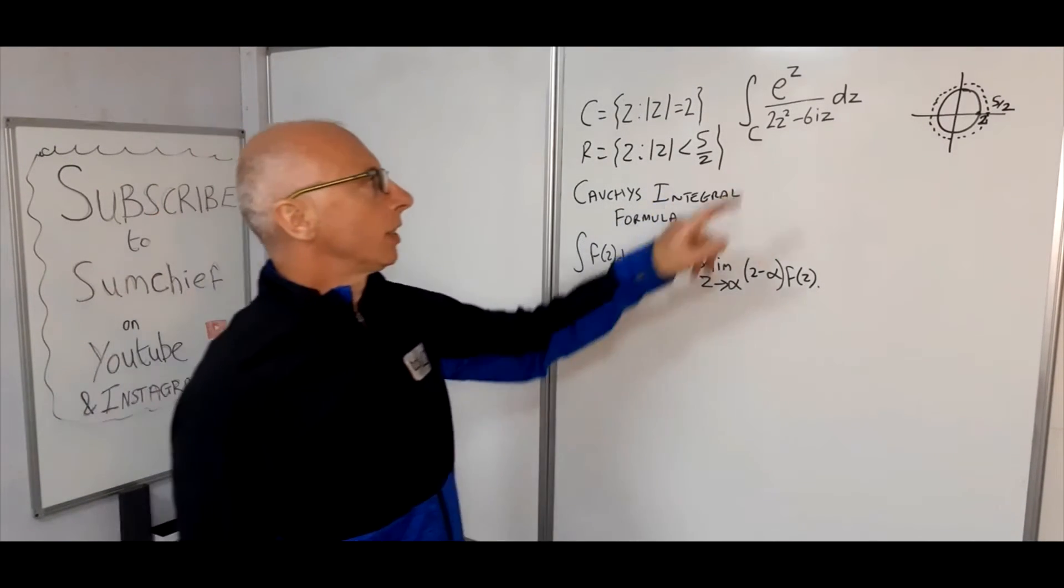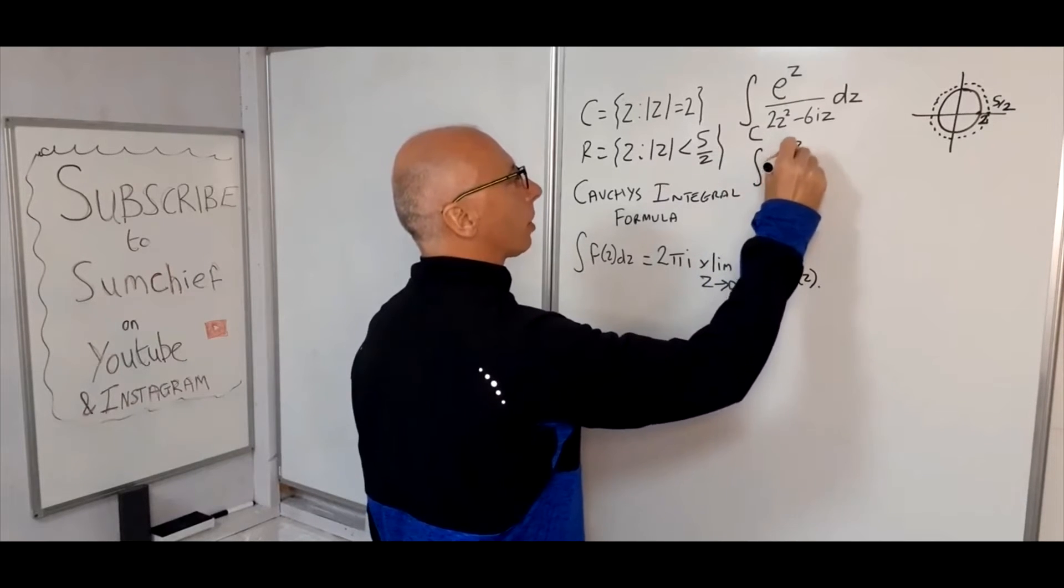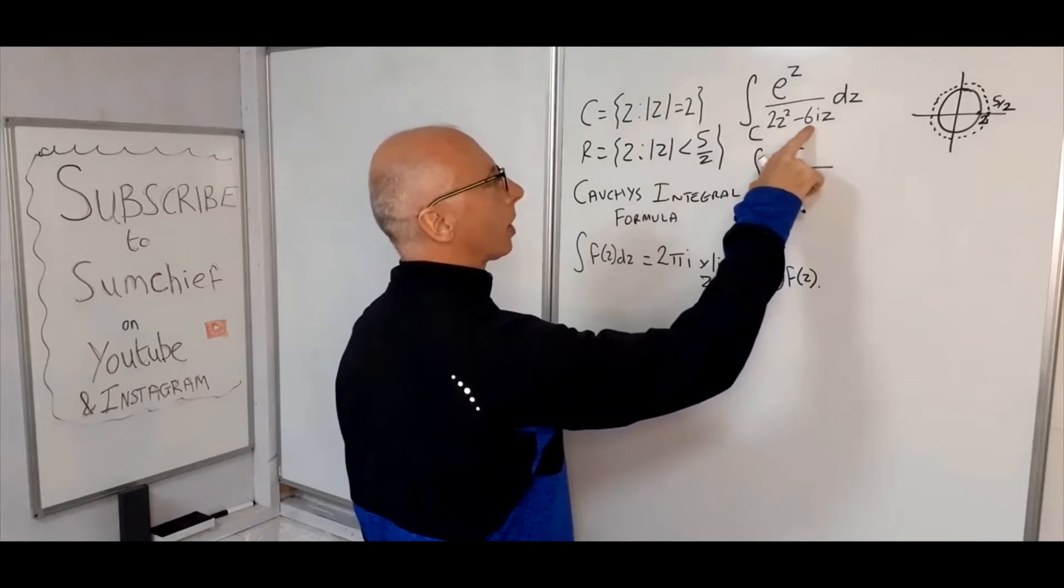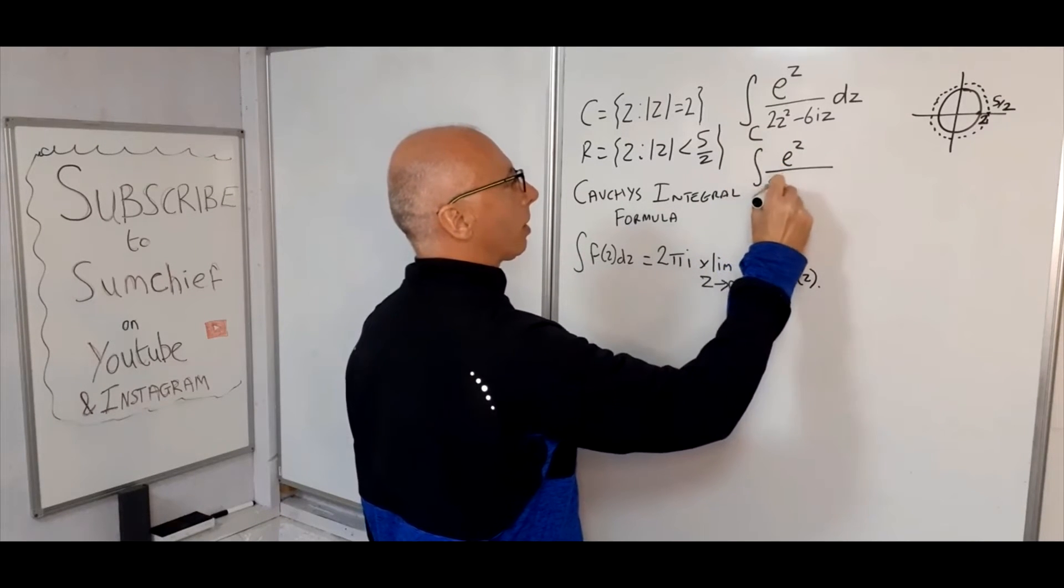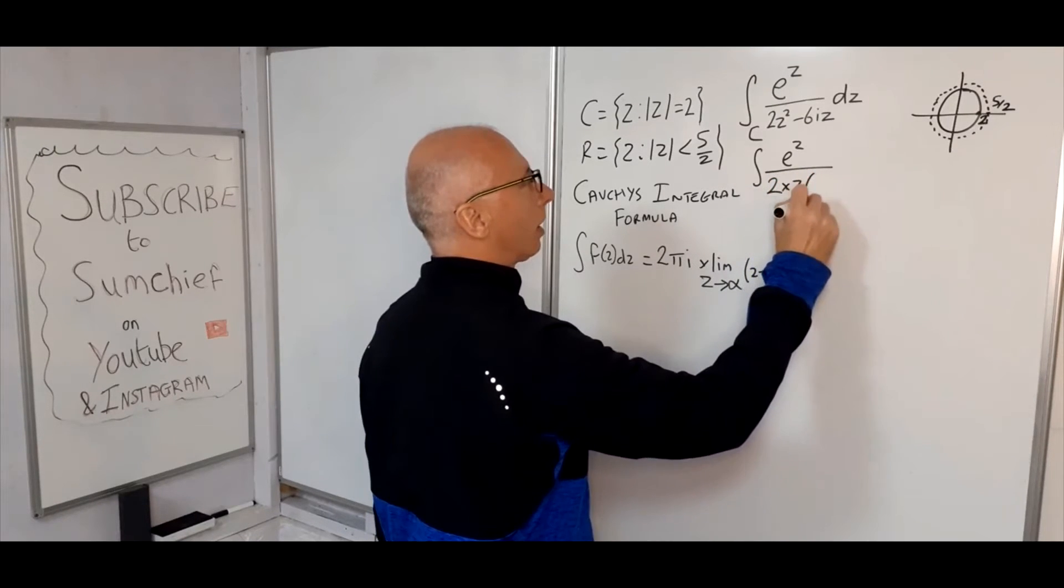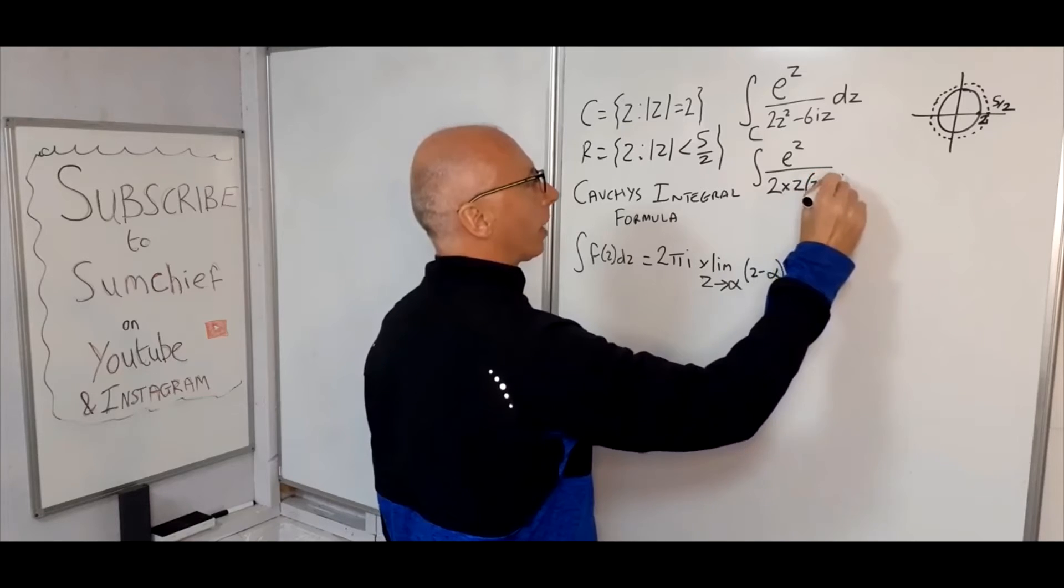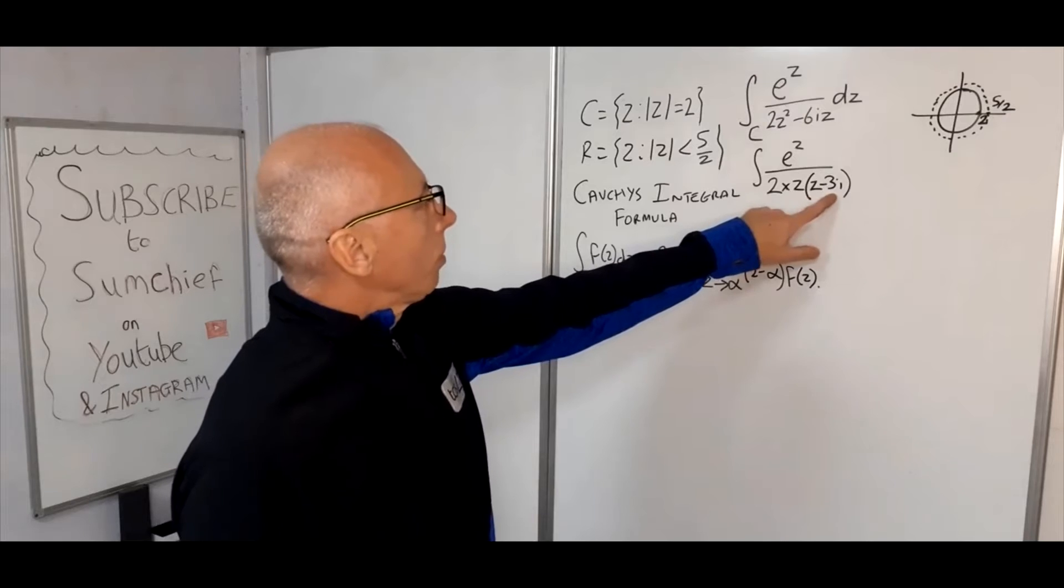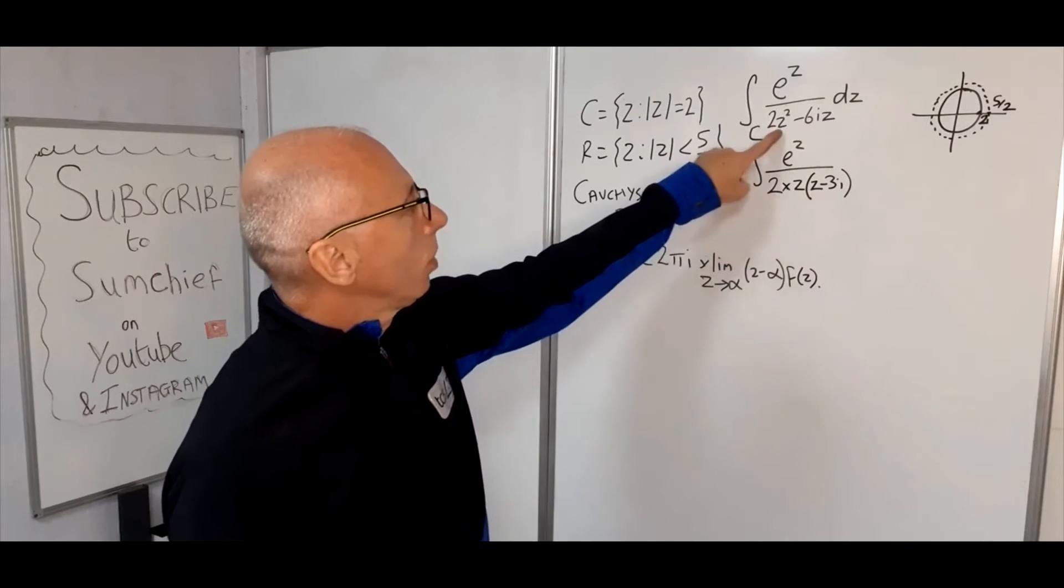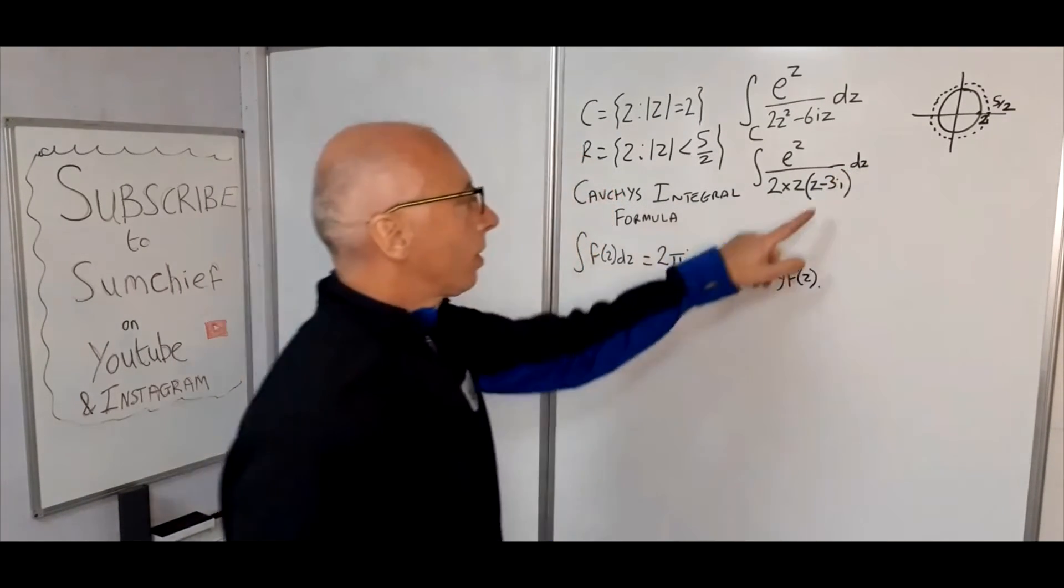So next we need to find out the singularities. Let's mess around with this integral here and see if we can reorganize it. So we've got to take the 2 out, which will bring that down to a 3. So that's 2z squared. So we can do 2 times z, z minus 3i. Minus 3iz times 2, that's minus 6iz. z squared times 2, 2z squared. So we haven't changed the value of the function at all, but now we've shown where the singularities are.